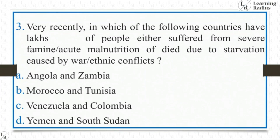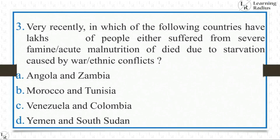Next question: Very recently, in which of the following countries have lakhs of people either suffered from severe famine or acute malnutrition, or died due to starvation caused by war or ethnic conflict? Options: Angola and Zambia, Morocco and Tunisia, Venezuela and Colombia, or Yemen and South Sudan. We have to check which countries face both famine/acute malnutrition and deaths due to war and ethnic conflict.